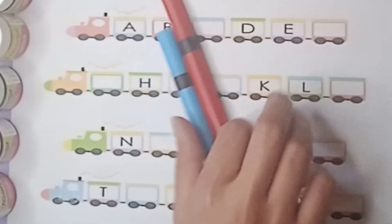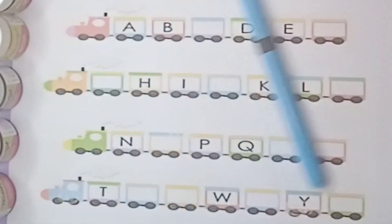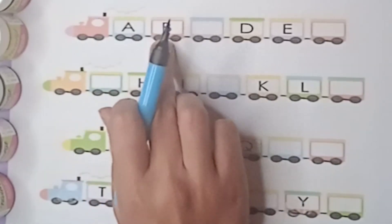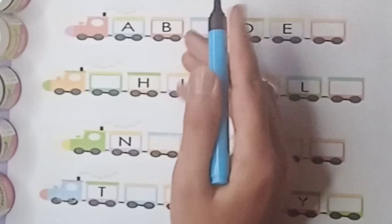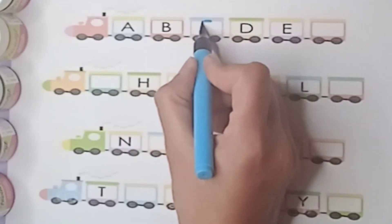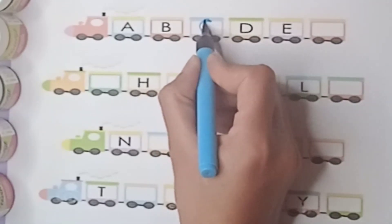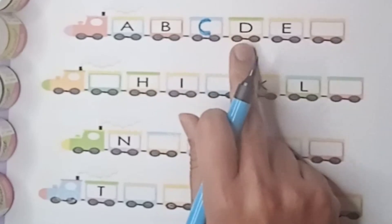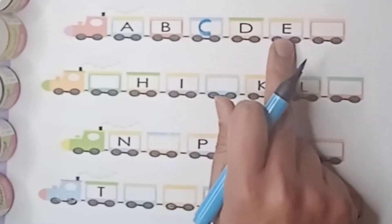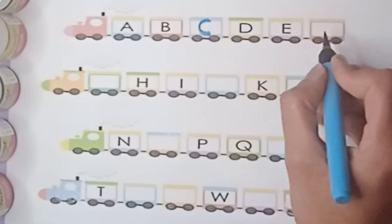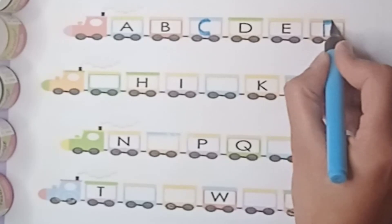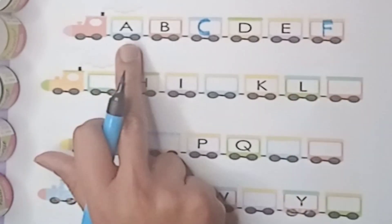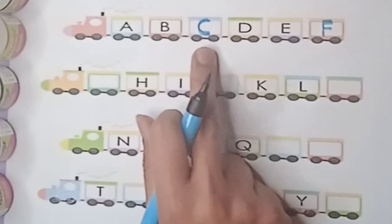Good morning kids, how are you all? Today we will learn about the missing letters. Are you ready? Now let's start. A, B, C. What comes after B? C, very good. D, E, F. Well done, it's F.